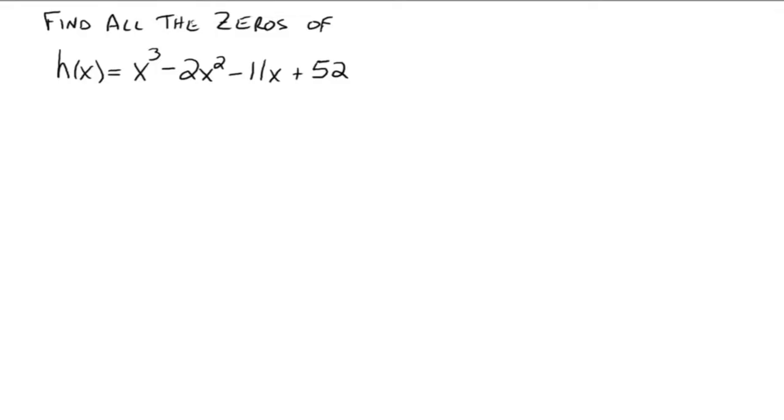Find all the zeros of h(x) = x³ - 2x² - 11x + 52. Again, I encourage you to graph the function to see if you can find a real zero first. So from graph, it looks like what is a zero? Everybody looking?